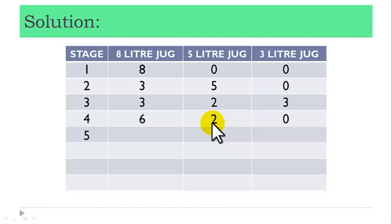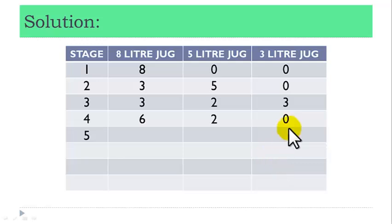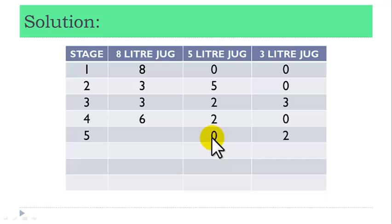Stage 5: turn the fluid in the 5-liter jug into the 3-liter jug to obtain 2-liter fluid there. The 5-liter jug remains empty, and we still have 6-liter fluid in the 8-liter jug.